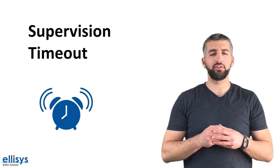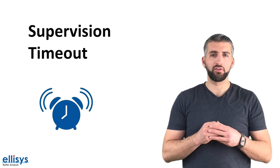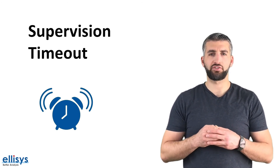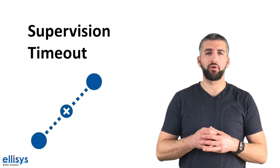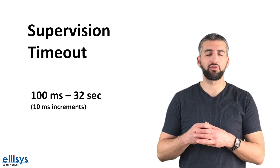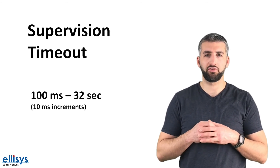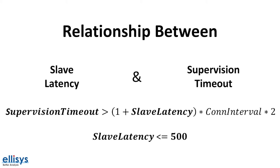Another important connection parameter is the supervision timeout. This is the period of time since the last data exchange from the other device at which the connection is considered lost. This value ranges from 100 milliseconds to 32 seconds in increments of 10 milliseconds. It's important to note that there's a relationship and restrictions on both the slave latency and supervision timeout values. The supervision timeout needs to satisfy a specific equation in relation to the slave latency, given that the maximum slave latency is at a value of 500.